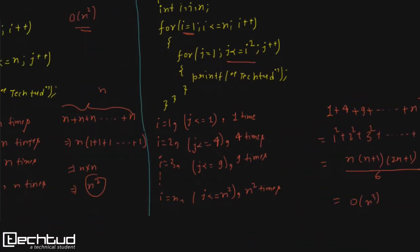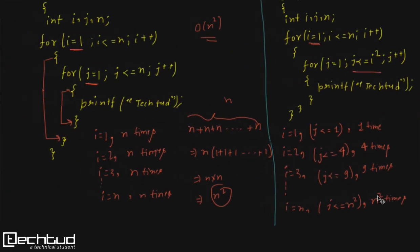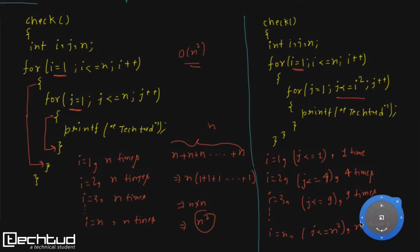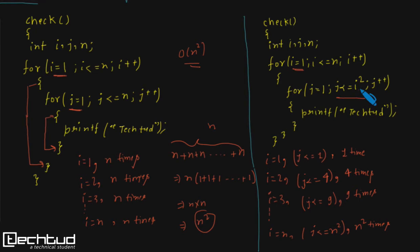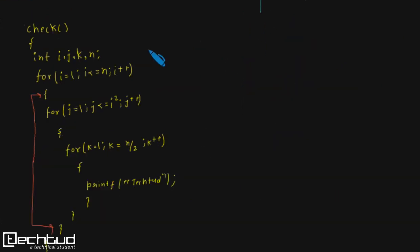So you should be very aware of this distinction: in the previous case the inner loop was independent of the outer loop giving O(n²), but here the inner loop is dependent on the outer loop giving O(n³). Now we will take another example.